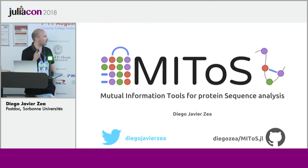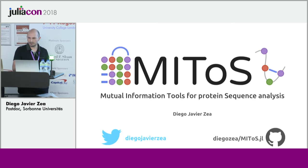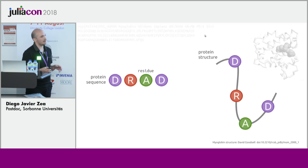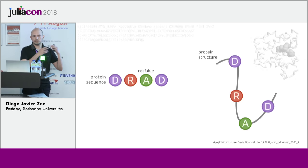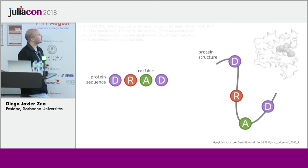But as you will see, it goes beyond that. Here we have a simple representation of a protein sequence. Basically, a protein sequence is a chain of amino acid residues and this chain can fold into structures in space, in different structures. So we can use Mitos to study both protein sequence and structure.